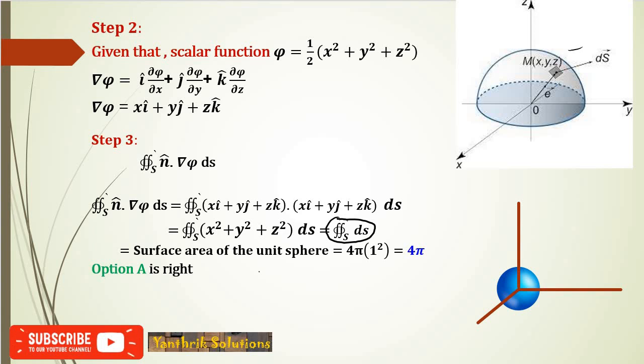The surface area of the unit sphere is 4πr², where r = 1 since we have unit radius. So 4π × 1² = 4π is the answer.